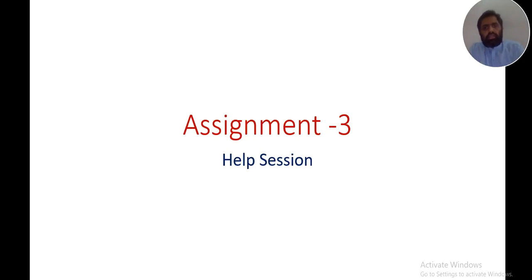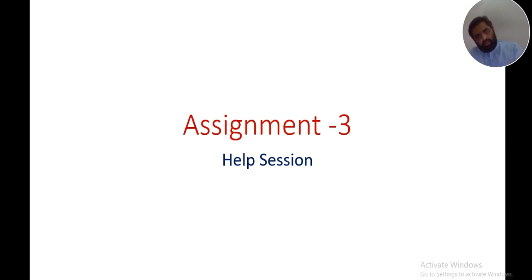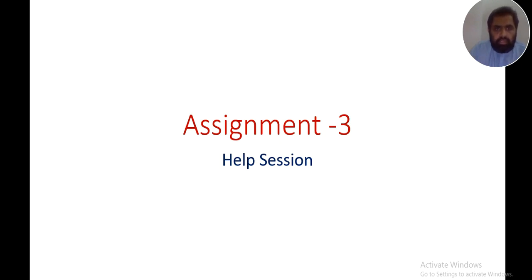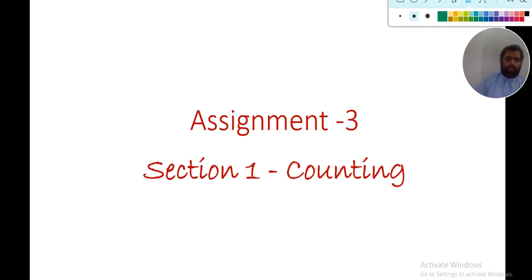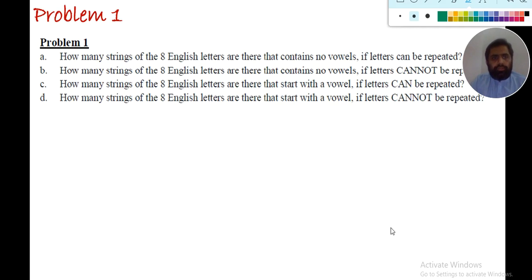Let's start our discussion with assignment number three. In this assignment we have three sections: the first section is about simple counting, termination, and permutation; the second section is about the principle of inclusion and exclusion; and the third section is about pigeonhole. Let's start with the first section about counting. The very first problem is how many strings of 8 English letters can be found with different requirements.